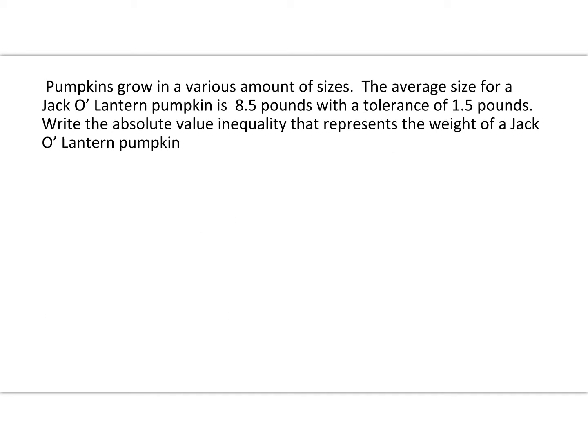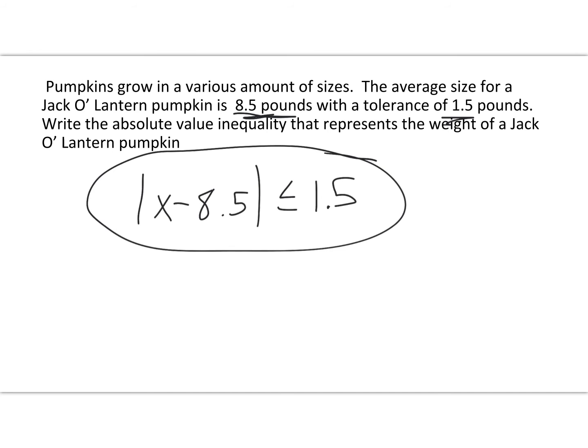Moving on. Pumpkins grow into various sizes and amounts. The average size for a jack-o-lantern pumpkin is eight and a half pounds with a tolerance of one and a half. Write the absolute value that represents the weight of the pumpkins. Nicely enough, they gave us everything — we don't have to do any math. Here's the mean, here's the tolerance, so it's just filling it in: the absolute value of x minus 8.5 is less than or equal to 1.5. How easy is that when they give you everything?